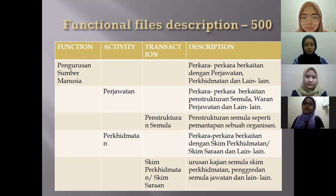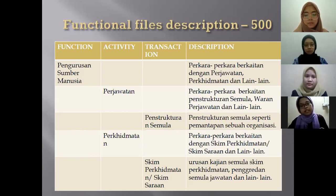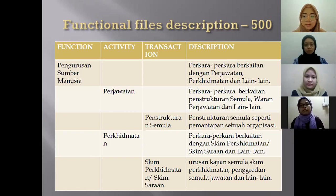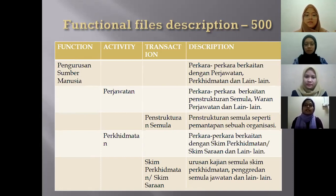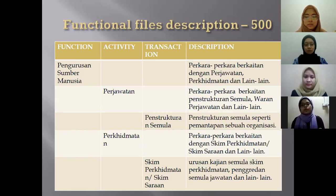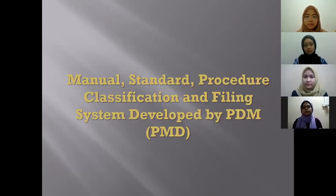The functional file description for code 500 covers pengurusan sumber manusia, divided into perjawatan and perkhidmatan. For perjawatan, it covers perkara berkaitan penstrukturan semula, waran perjawatan dan lain-lain. The transaction is penstrukturan semula, seperti pemantapan sebuah organisasi. For perkhidmatan, it covers perkara berkaitan dengan skim perkhidmatan atau skim saraan dan lain-lain. The transaction is skim perkhidmatan atau skim persaraan — urusan kajian semula skim perkhidmatan, penggeredan semula jawatan dan lain-lain.